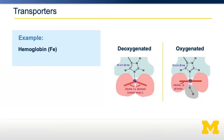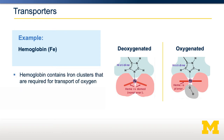A third example is how a micronutrient can support transport. Shown here is the structure of heme within hemoglobin, the protein required for the transport of oxygen. That iron is critical for the binding and transport of oxygen from our lungs to our other tissues. If you don't have sufficient amounts of iron, you cannot generate functional hemoglobin and therefore cannot effectively transport oxygen throughout the body.